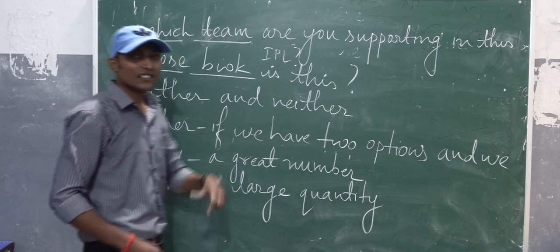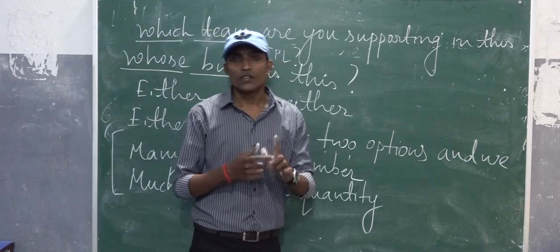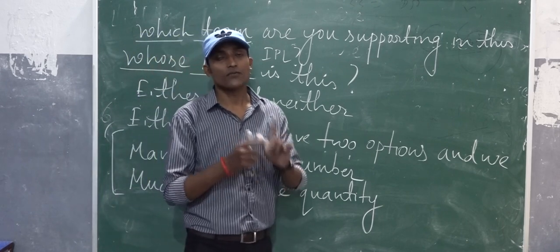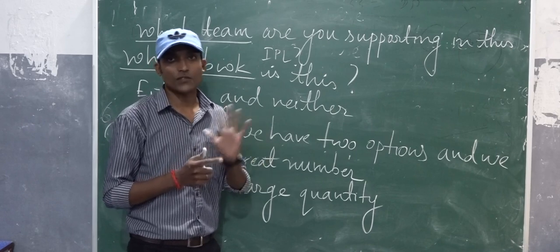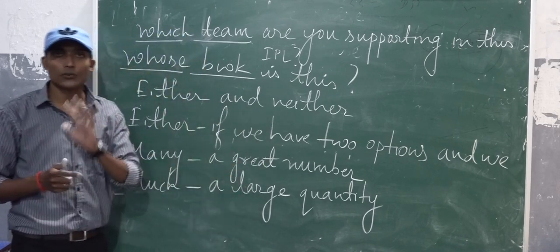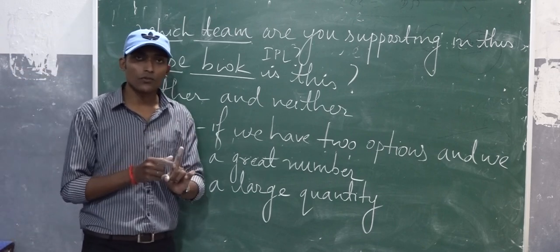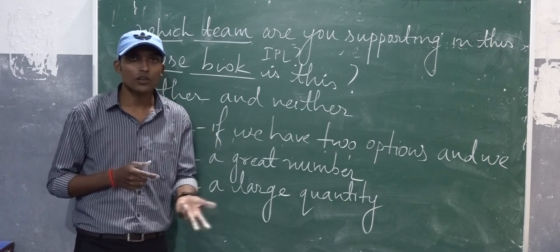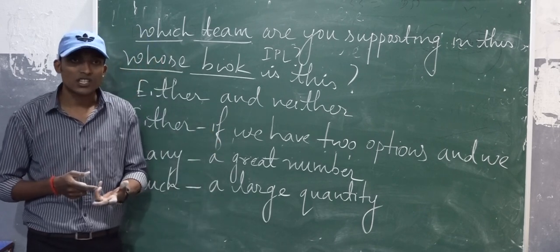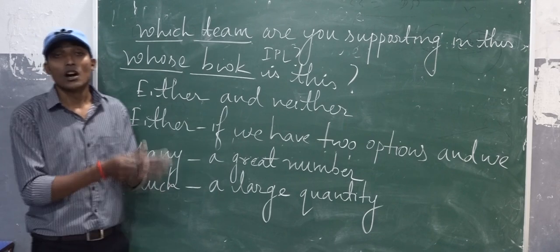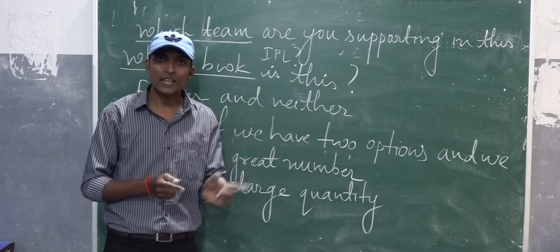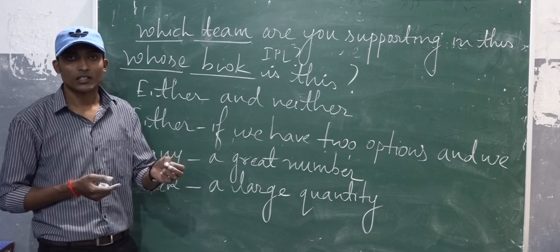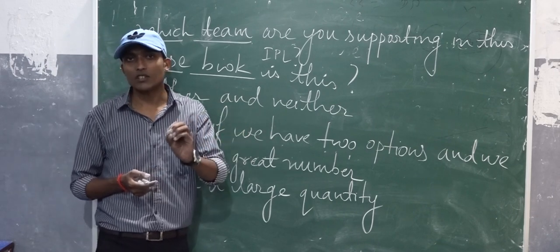Some and any: we use 'any' to show negative sense and 'some' to show positive sense. Few and a few: we use 'few' to show negative sense — few means hardly any. We use 'a few' to show positive sense — a few goods means some goods. Similarly, 'little' means hardly anything, and 'a little' means a small quantity.